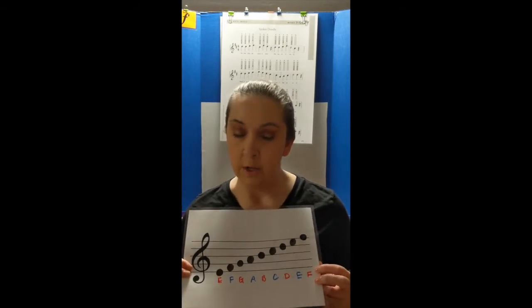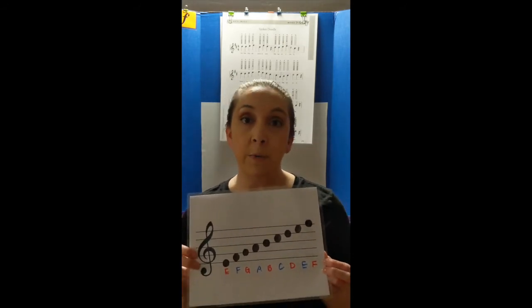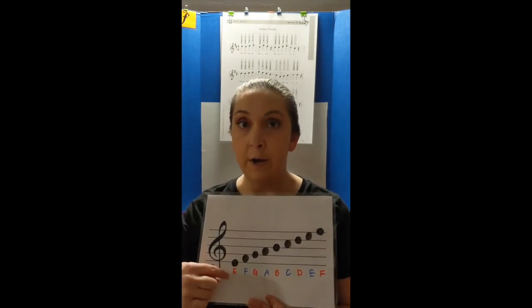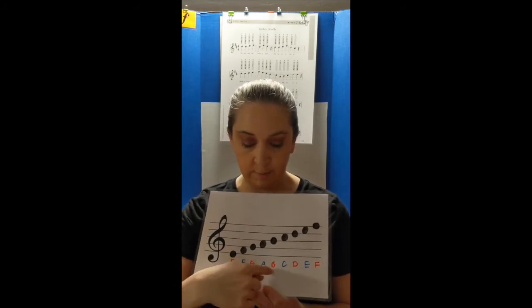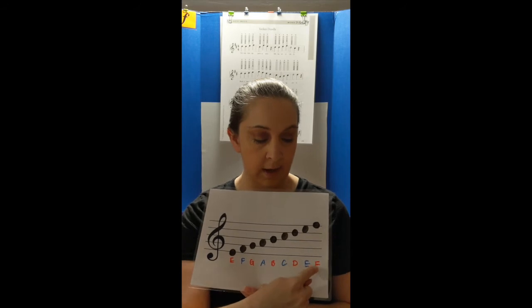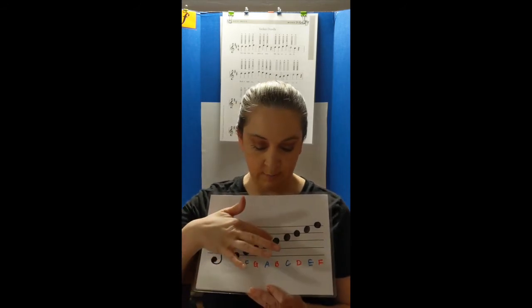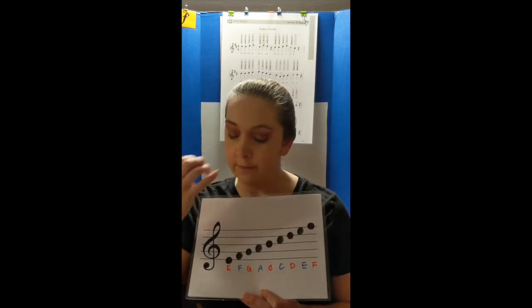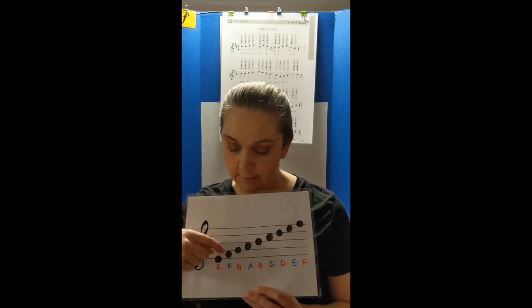Usually we group them by either lines or spaces. Looking at just the line notes — shown in red — the note names are E, G, B, D, F. And if we look at just the spaces — the blue ones — it begins with F, A, C, E.